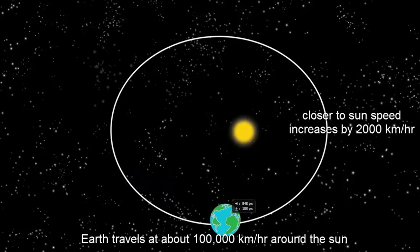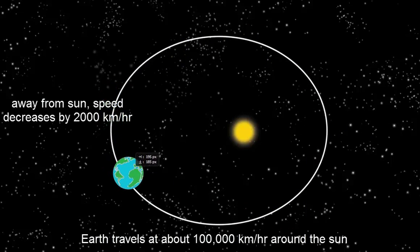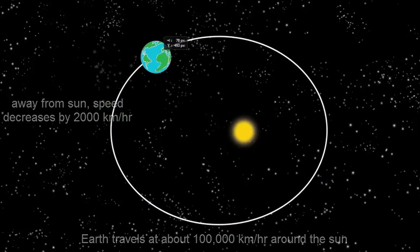And when it is closer to sun, its speed increases by 2,000 km per hour. And similarly, slows down by 2,000 km per hour when it is at the farthest.